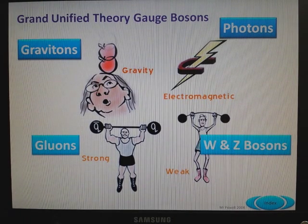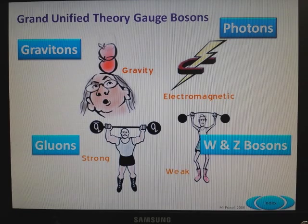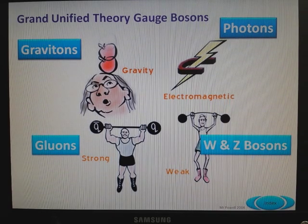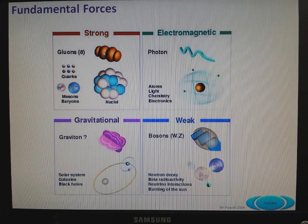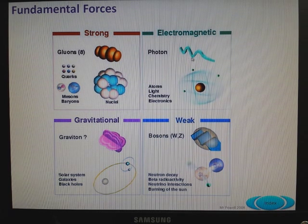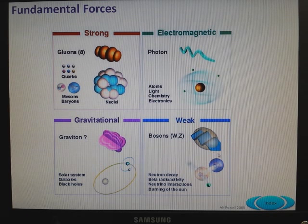The Grand Unified Theory of gauge bosons says that particles interact either with photons, gravitons, gluons, or W and Z bosons. We're mainly going to focus on the W boson for AS Physics. Representations in pictures show gluons, electromagnetic as a photon, graviton is a predicted thing we don't really cover, and bosons as W or Z with little squiggly lines.